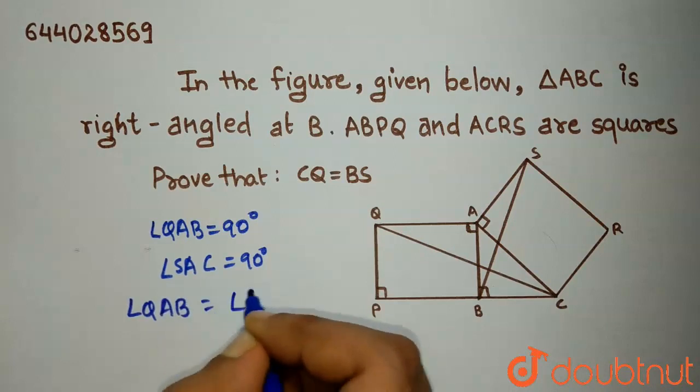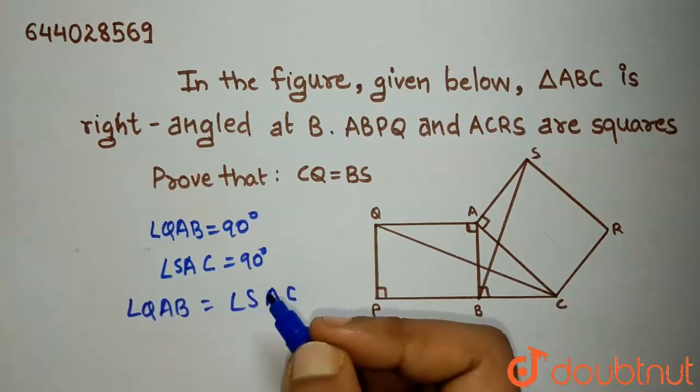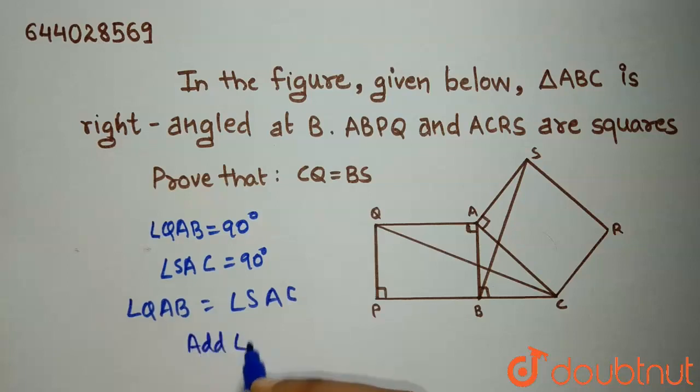angle QAB equals angle SAC. Now add angle BAC to both sides.